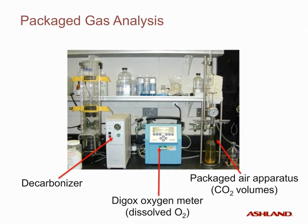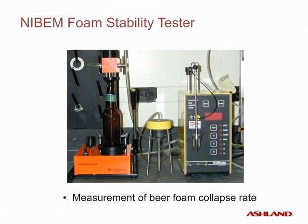This slide shows some of the additional pieces of equipment available in our laboratory. The decarbonizer removes CO2 before sample analysis. A Digox oxygen meter measures dissolved oxygen in beer. The packaged air apparatus measures CO2 volumes and packaged air in beer. The NIBEAM Foam Stability Tester measures foam collapse rate as a function of time — a uniform cuvette of beer foam is generated using a foam flasher, and a set of movable electrodes follow the foam as it slowly collapses. The time required for the beer foam to fall 30 millimeters is used to calculate the beer foam collapse rate.